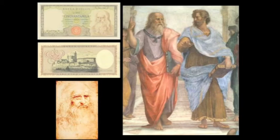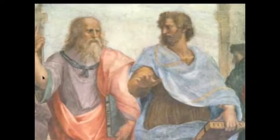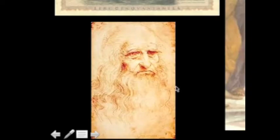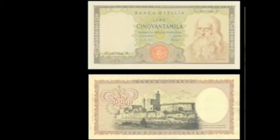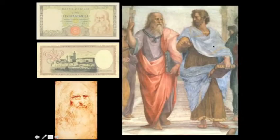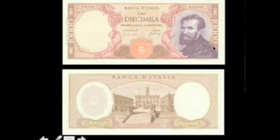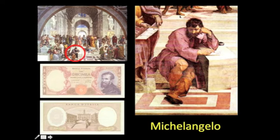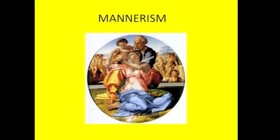I just want to show you Leonardo — this is Leonardo as Socrates in the School of Athens, and this is a sketch considered to be a self-portrait of Leonardo. And this is the old 50,000 lire with Leonardo on the money. I liked the old money before they got those nasty little euros in. Michelangelo also got on the money — he was on the 10,000 lire note. So let's look at Michelangelo.